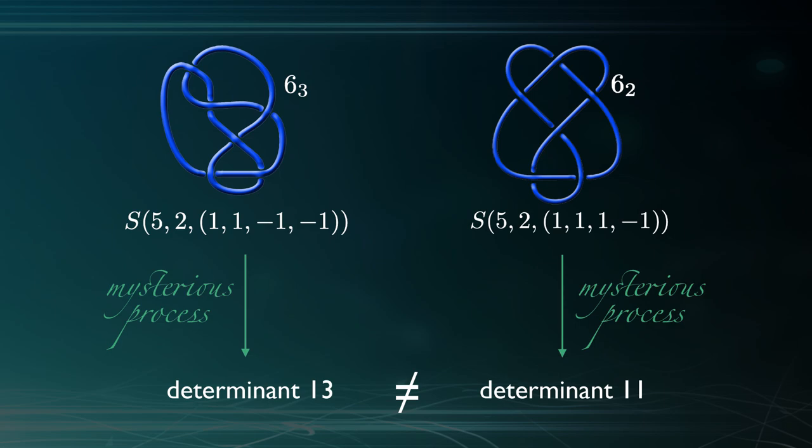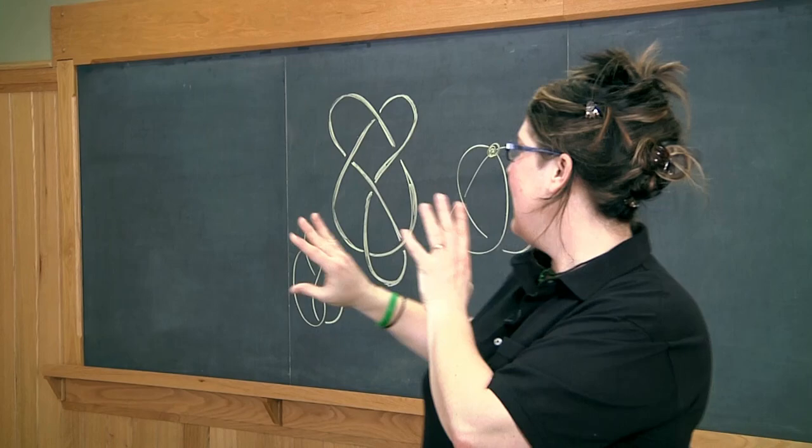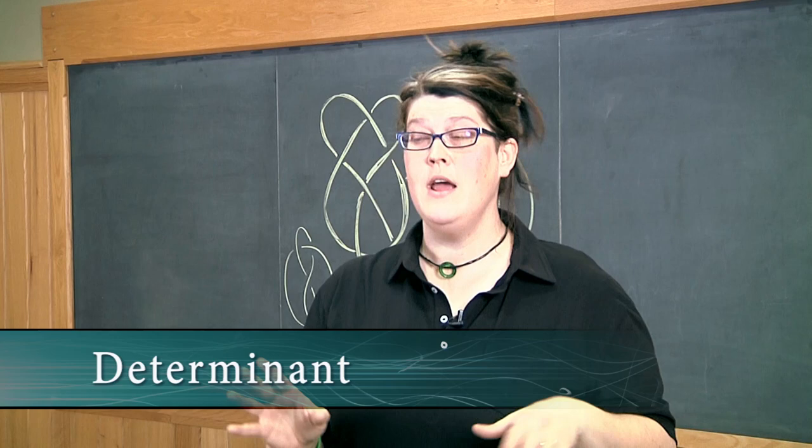I don't want to get into the details because I just want to tell some stories about how I'm using technology. But there's a way that we could label the strands and crossings and create a matrix and take the determinant of minors. So knot 63 gets a determinant, and knot 62 gets a determinant.